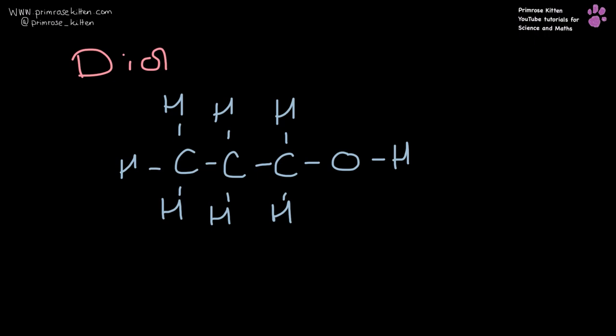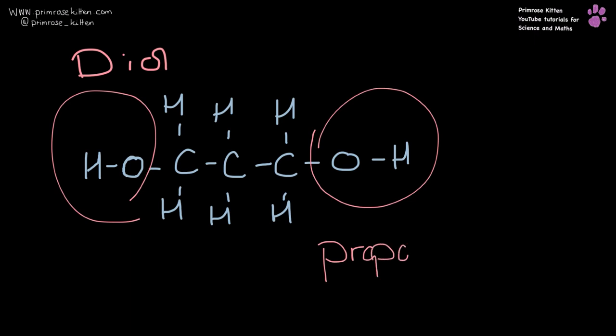Here we have an alcohol. We have three carbons and our functional group on the end here, so this is propanol. If we're talking about a diol, we have one, two alkyl groups, so this is propan-1,3-diol.